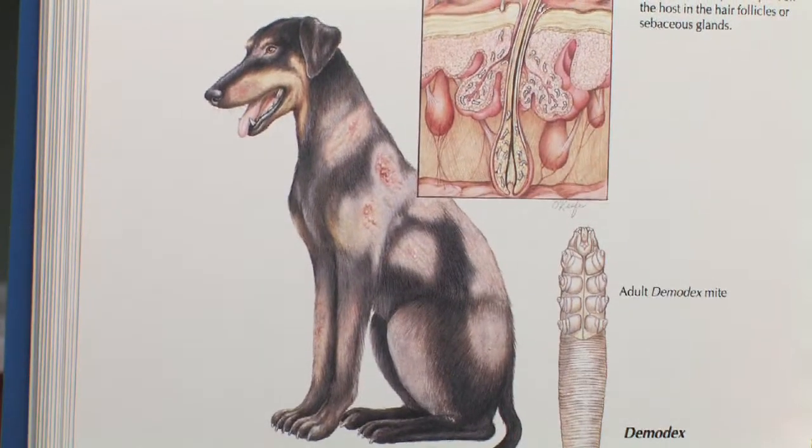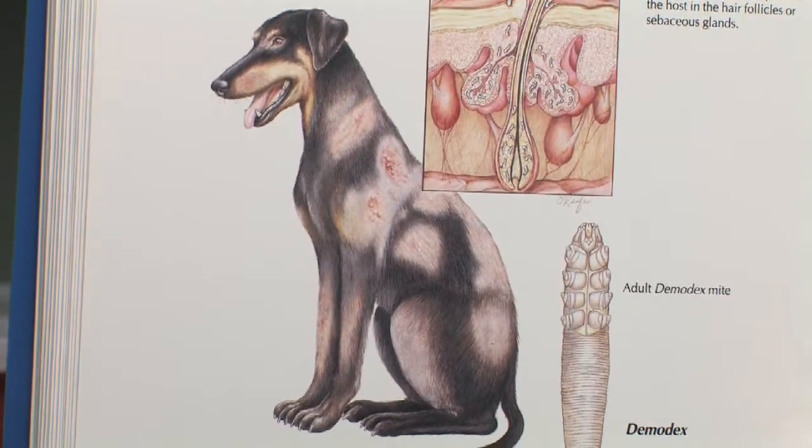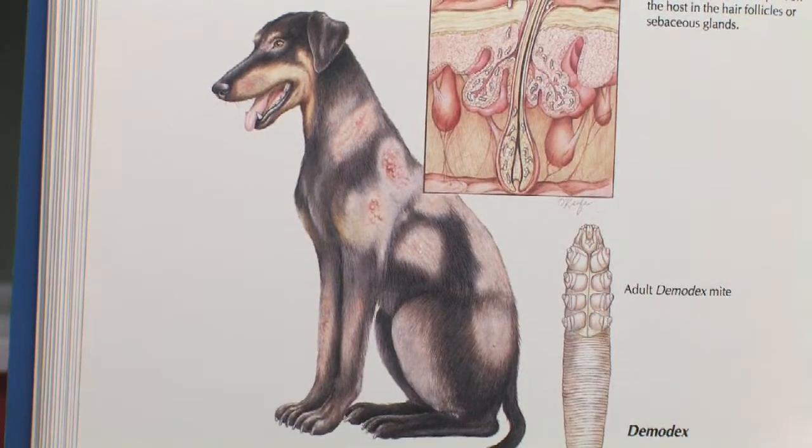Other common things could be skin infections and rashes, reactions to topical things or bedding. We also see mange — sarcoptic and demodex mange — which is a very common type of skin disorder that we see in younger dogs or dogs that are strays that aren't being fed very well or are immunosuppressed.